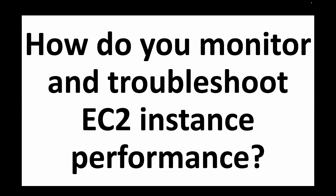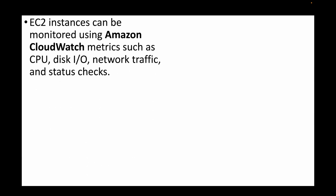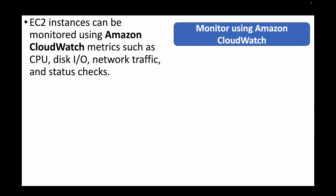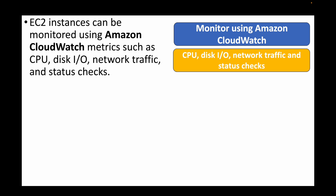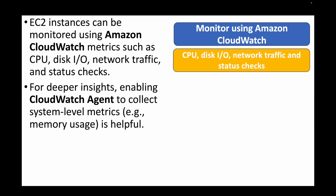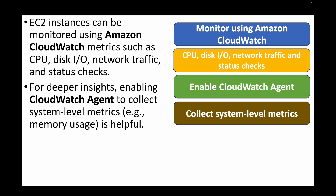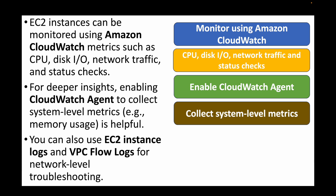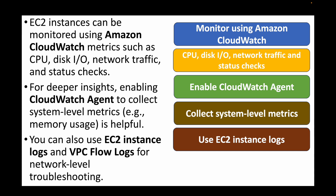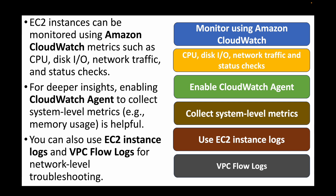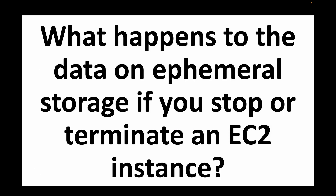The next question is: how do you monitor and troubleshoot EC2 instance performance? For monitoring in AWS we use Amazon CloudWatch. With EC2 we can monitor metrics like CPU utilization, disk I/O, network statistics, and more. For deeper insights, we can install the CloudWatch agent on EC2 instances to collect system-level metrics like memory usage and process information. We can also push instance logs to CloudWatch and use VPC Flow Logs to monitor inbound and outbound network-level traffic.